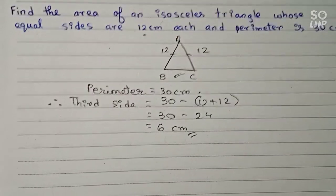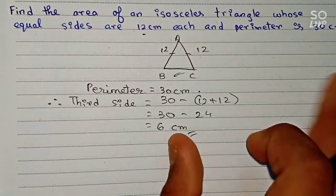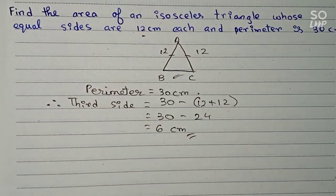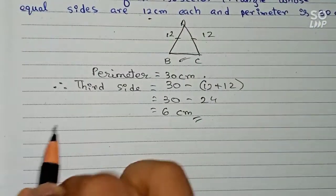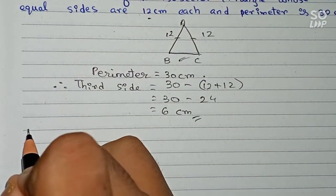So therefore the third side is 6 centimeters. So now with this information we can find out the area of the isosceles triangle. For area, first we have to find out the semi-perimeter.